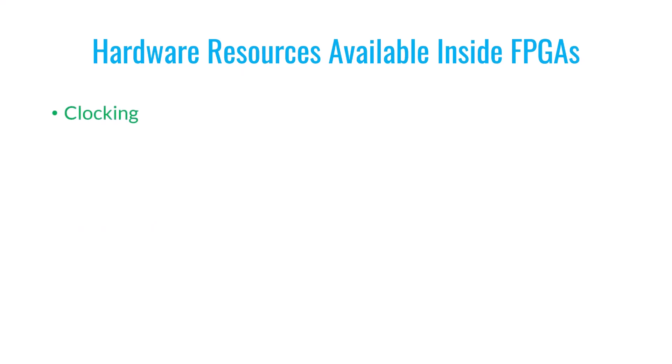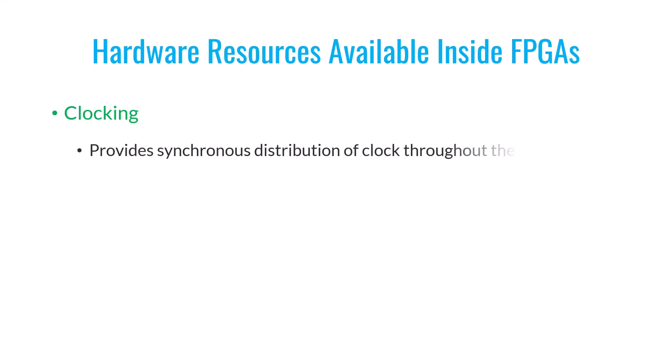Now let's talk about clock resources. Clock management is a critical aspect, particularly when you are working on synchronous circuit designs. An FPGA is essentially a large circuit, and it needs to distribute the clock signal simultaneously to different parts of itself. However, the path that the clock signal takes can have varying lengths, leading to different delays in reaching different sections of the circuit. In synchronous systems, the goal is to make sure the clock reaches all parts of the system at the same time, so FPGAs provide mechanisms to synchronize the clock across the system.